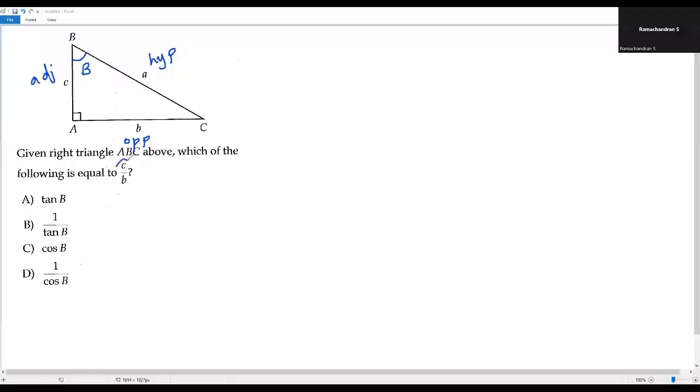And the name of the third side is adjacent. Here we have C and B. C is the length of adjacent side and B is the length of opposite side.